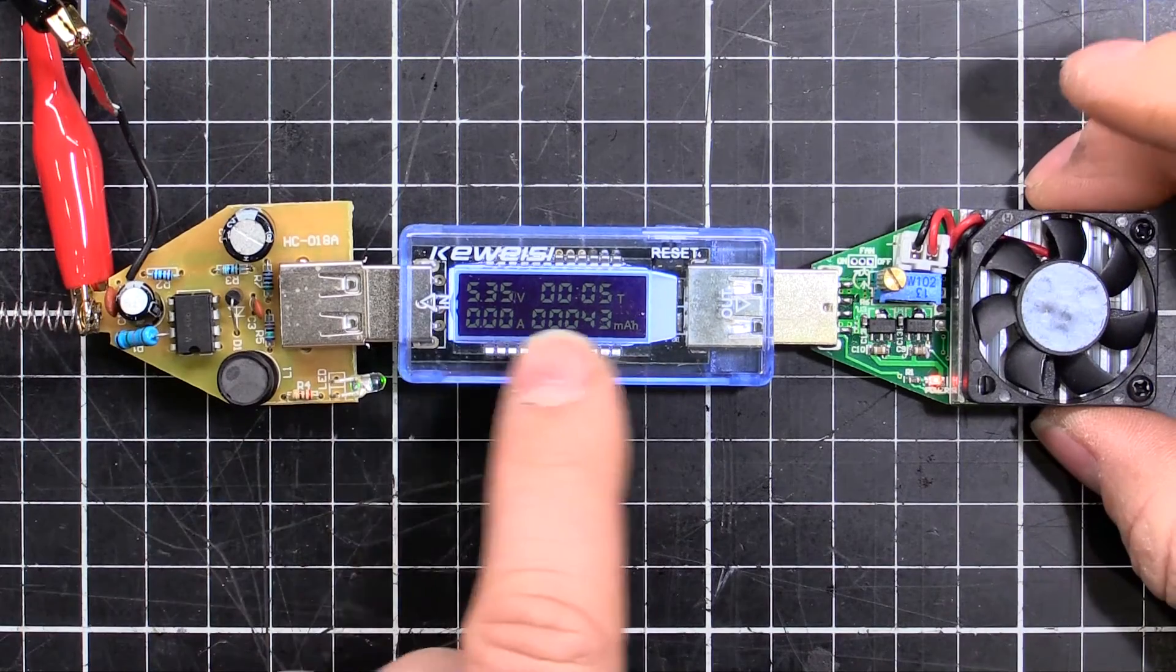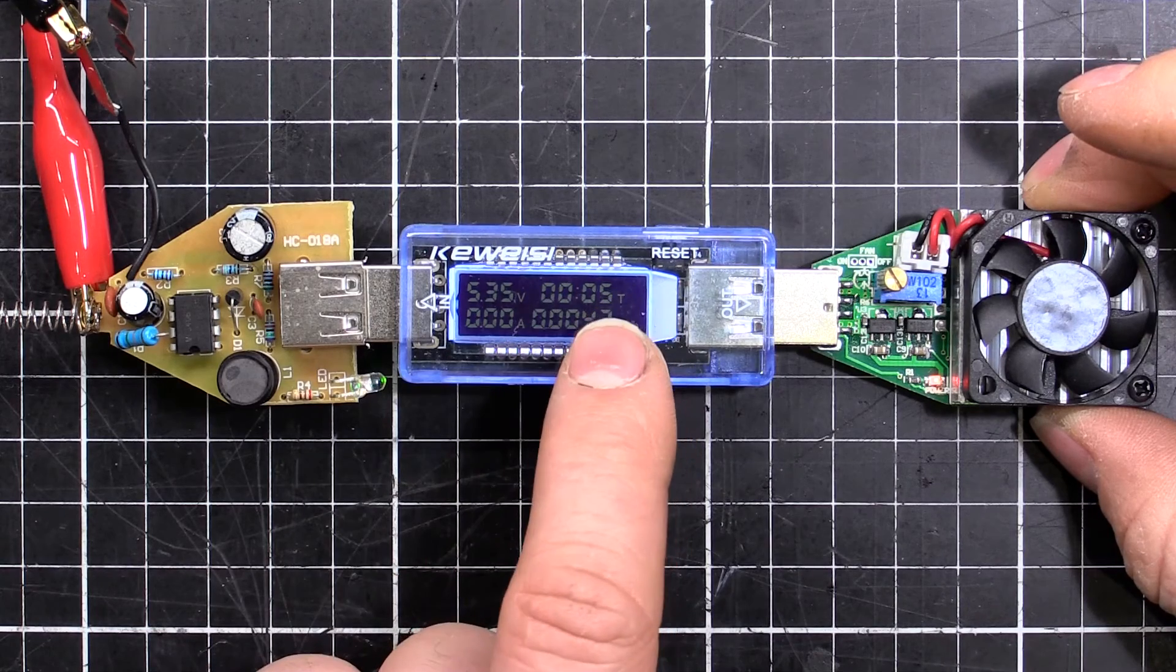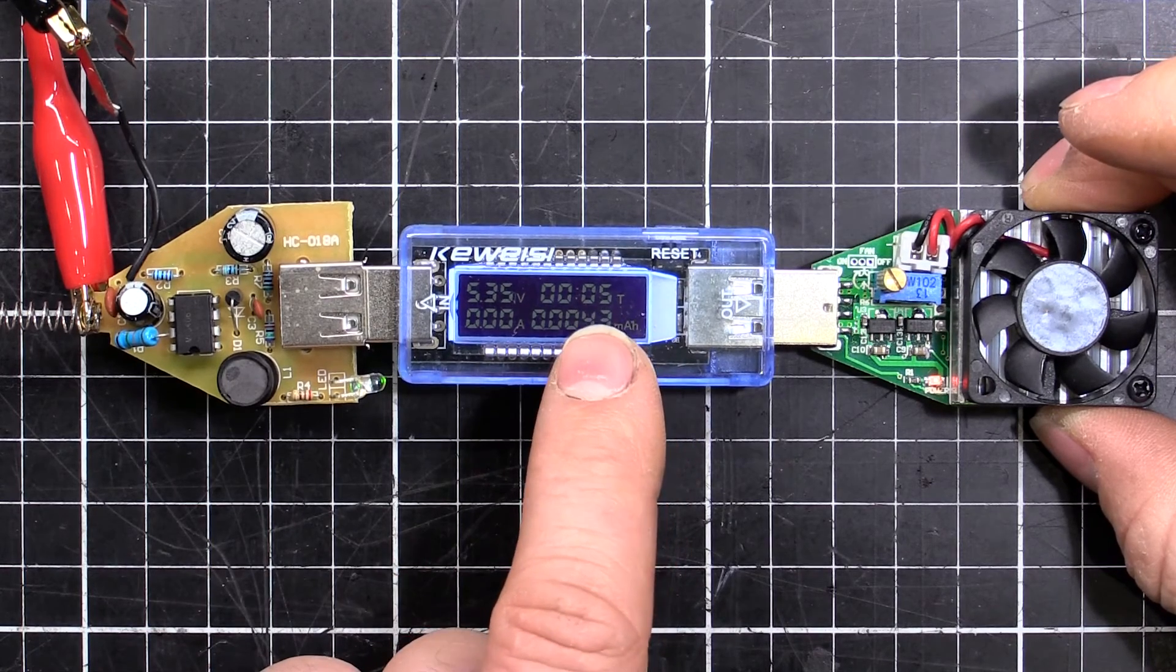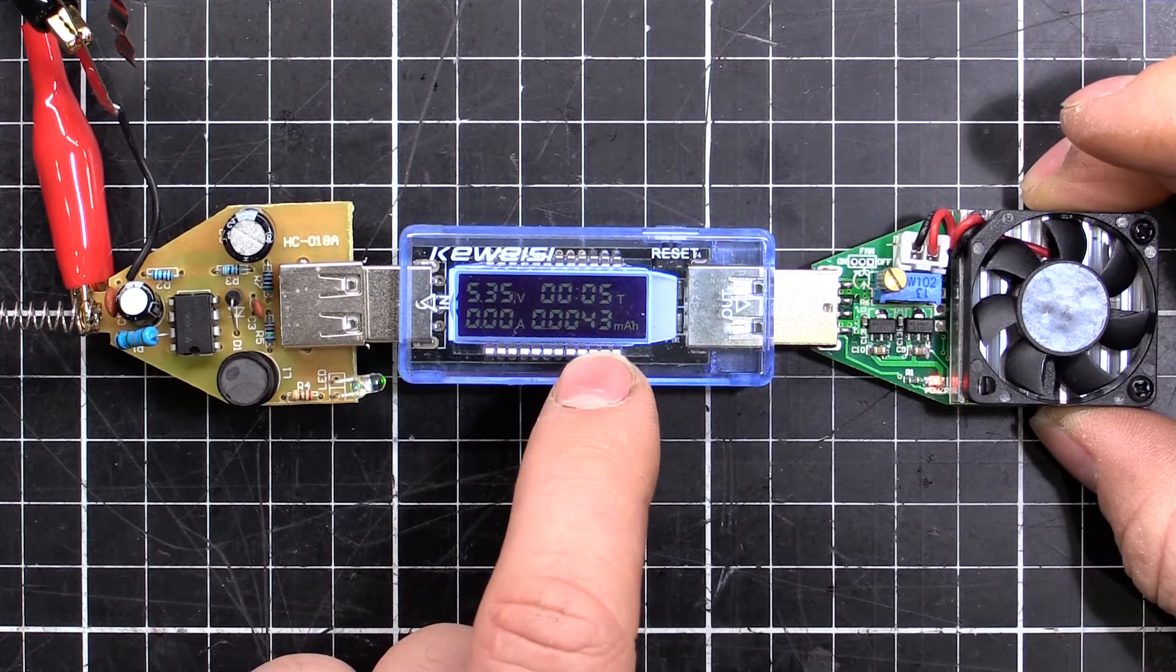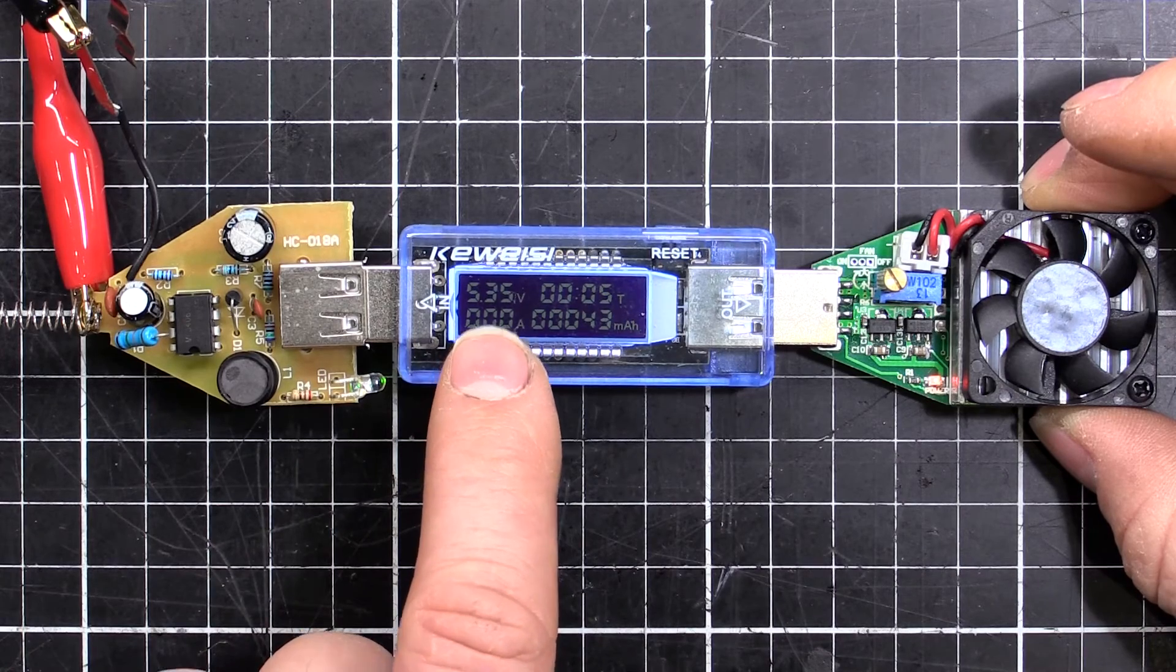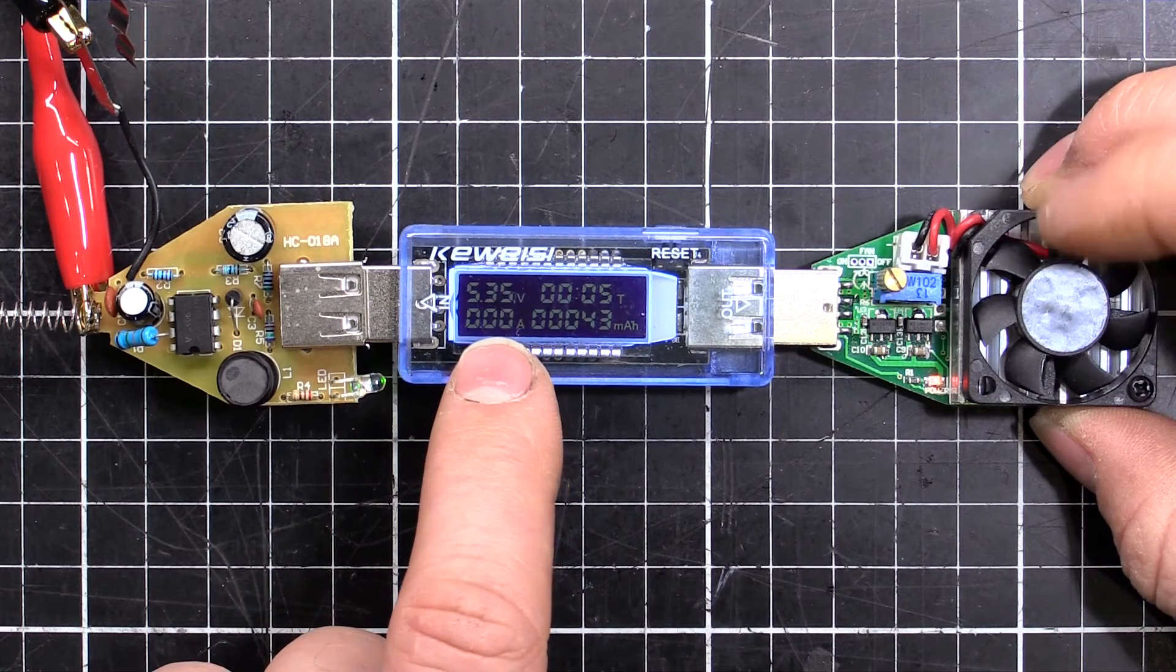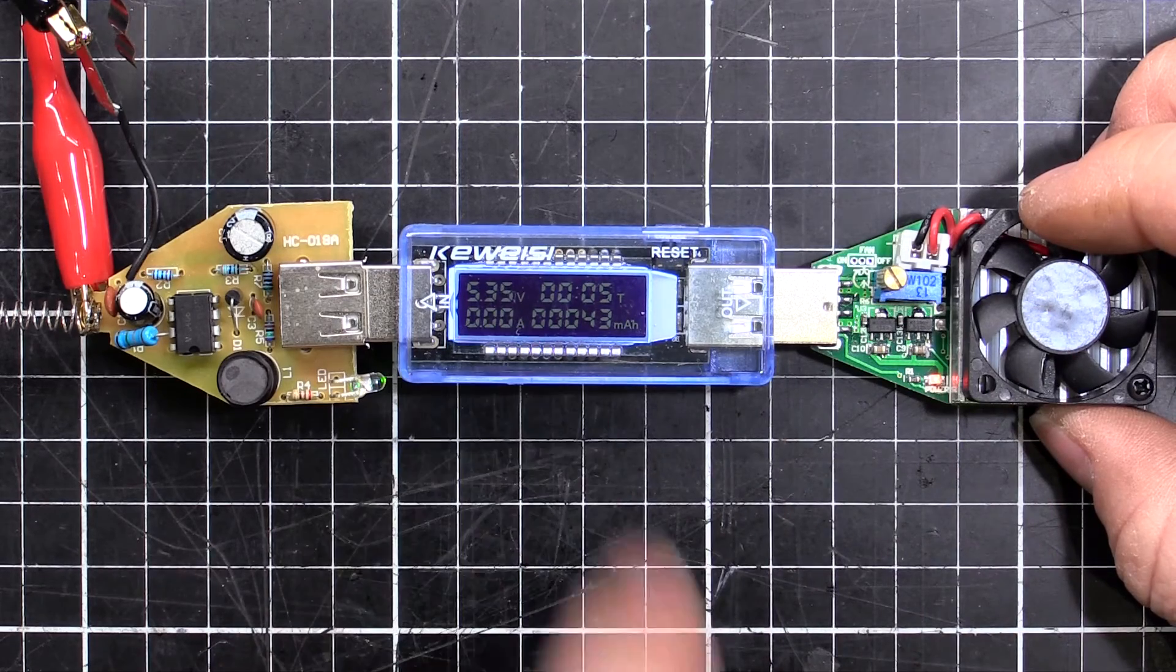So we're plugged in. I got a little meter here telling us voltage, current, time, that's how long it's been running once it starts drawing current, and milliamp power, that's for battery testing. But we're mainly interested in the voltage and current. So with an open circuit or no current draw at least, we've got 5.35 volts.